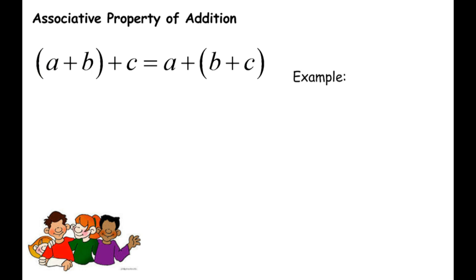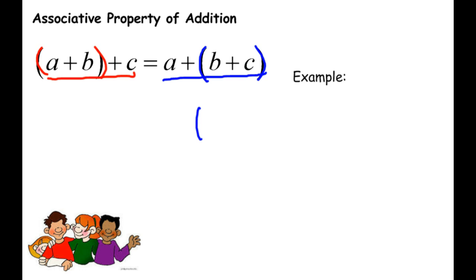Associative property of addition — the base word is associate. Think back to kindergarten: you've had the same kids in your class, but you may hang out with different kids now. A, B, and C are all still in the class together. In kindergarten, A and B were friends and hung out in a group; but in 7th grade, B and C associate together. A, B, and C are still in the same order — they didn't move — they just changed who they're grouped with.